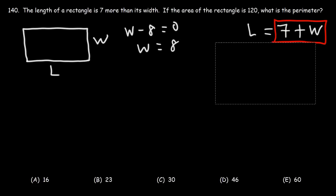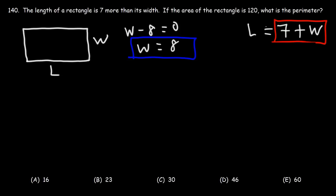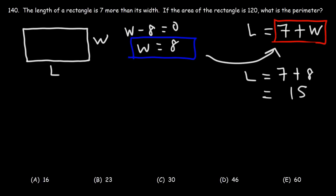Now that we know the width of the rectangle, we can calculate the length. Plugging into our equation: L equals seven plus W, or seven plus eight, so the length of the rectangle is 15.